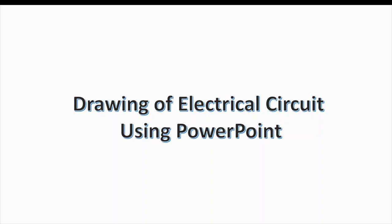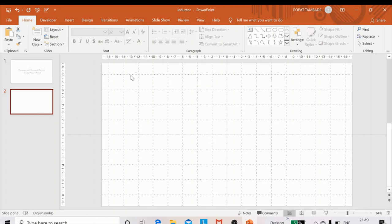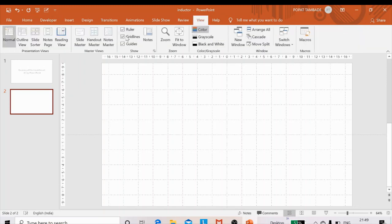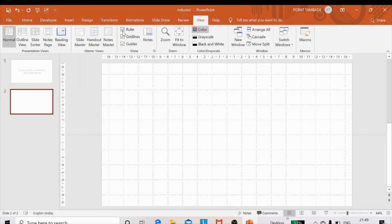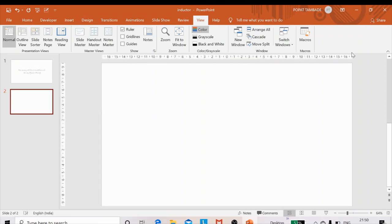Here is our demonstration of drawing an electrical circuit. For this purpose, take a blank slide and check whether the slide has rulers, grid lines, or guides. If there are no guides or grid lines on the slide, simply go to View and check these boxes.